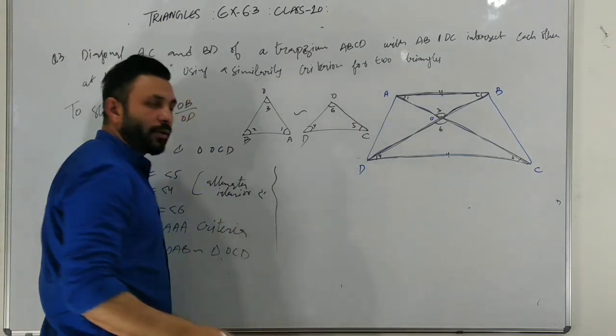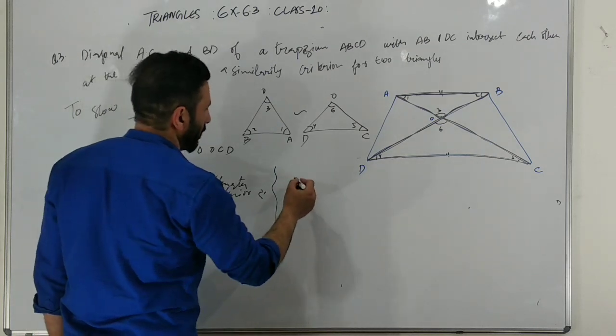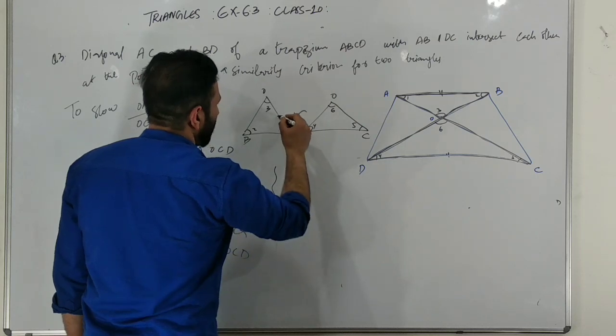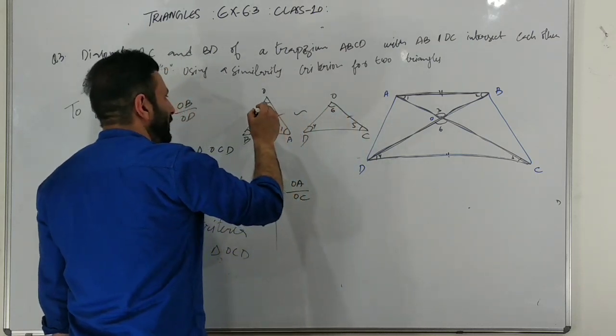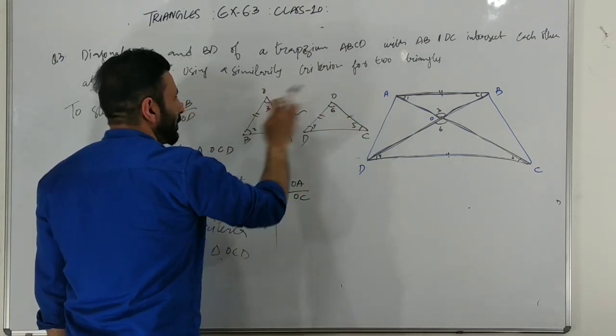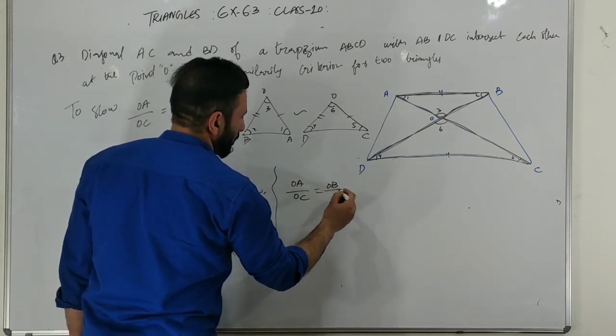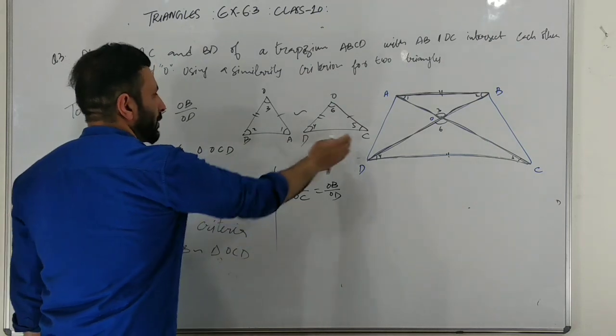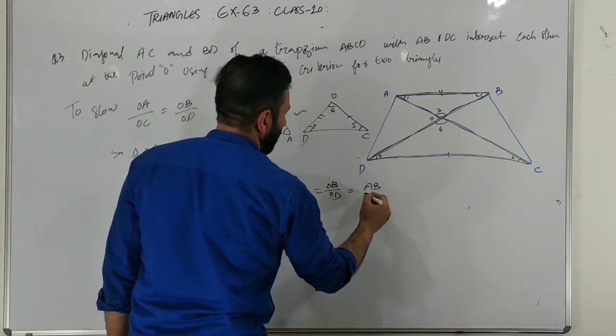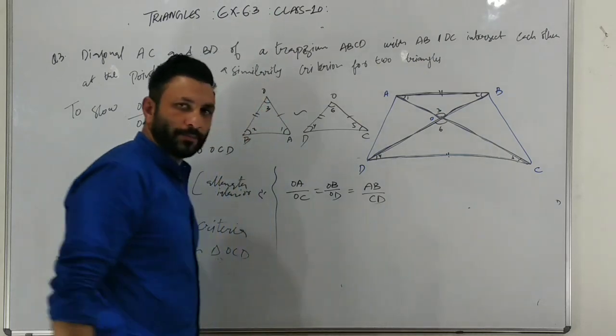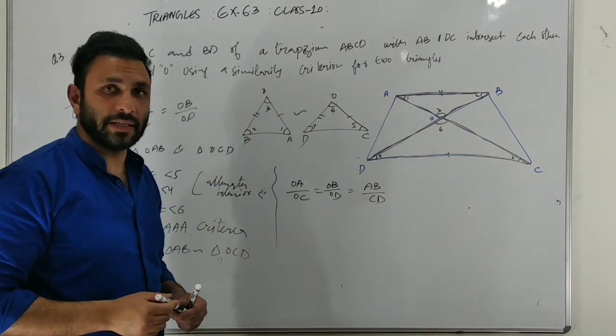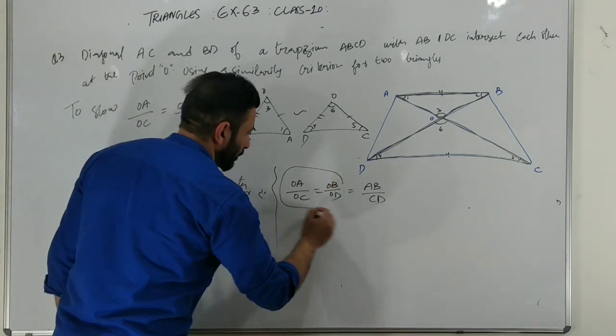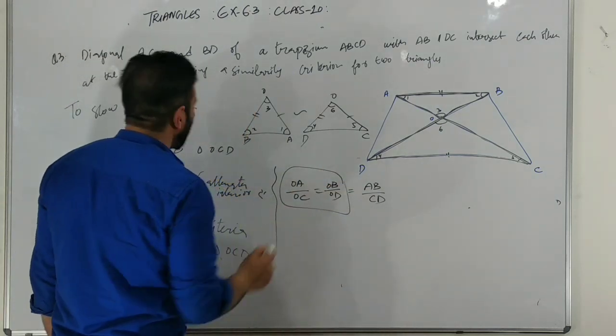When two triangles are similar, the corresponding sides ratio will be equal. OA by OC, OB by OD, and AB by CD. It will be equal to OA by OC is equal to OB by OD. When two triangles are similar, the corresponding sides will be equal.